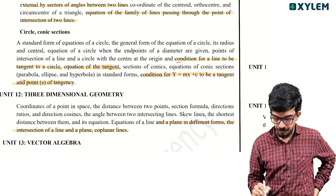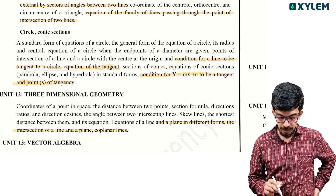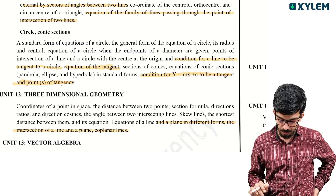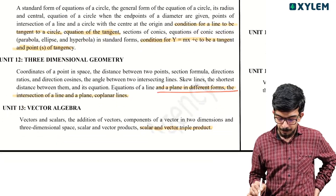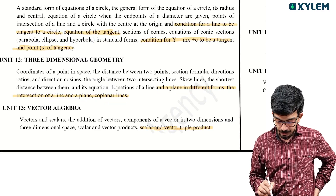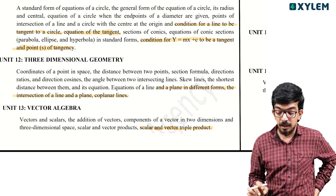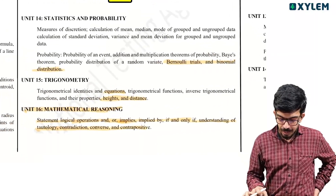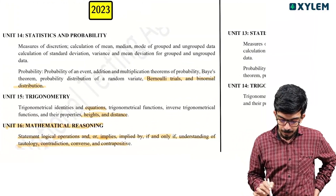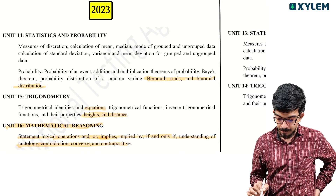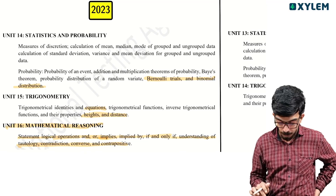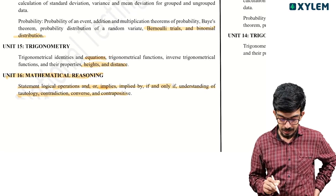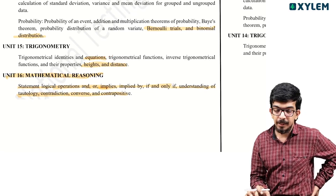The condition for a line to be a tangent to a circle, the equation of the tangent, and the point of tangency are removed. In 3D geometry, plane-related secondary topics are removed. In vector algebra, the scalar triple product is removed. In statistics, Bernoulli trials, probability, and binomial distribution are removed. Trigonometric equations, heights and distances, and mathematical reasoning are removed.